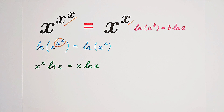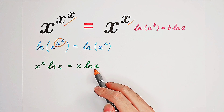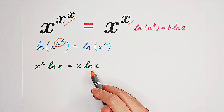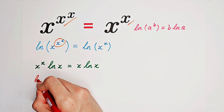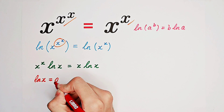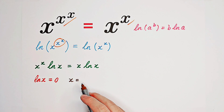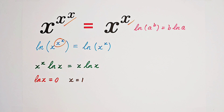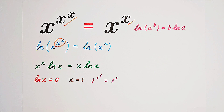Now we might think to divide both sides by natural log of x, but we cannot, because natural log of x can be equal to zero. So we have to consider the case where natural log of x equals zero. That means x equals e to the power of zero, which is one. Checking x equals one: one to the power of one to the power of one equals one to the power of one — this is a true statement. So x equals one is a solution.